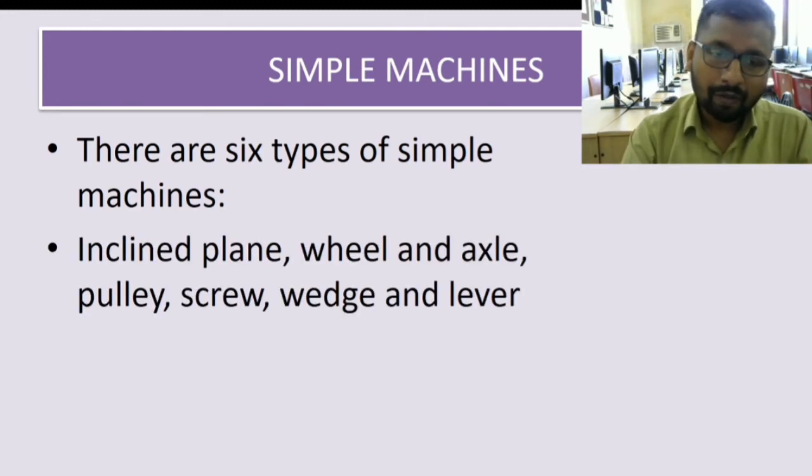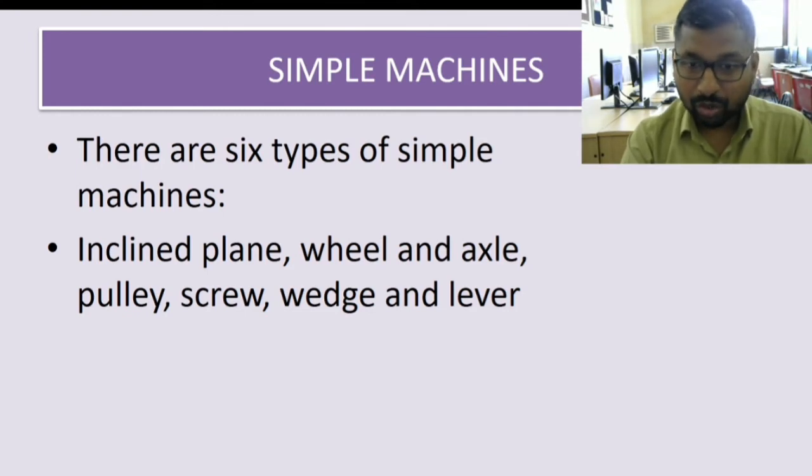There are six different kinds of simple machines: inclined plane, wheel and axle, pulley, screw, wedge, and lever. These are the six different kinds of machines. One by one we are going to see each simple machine.